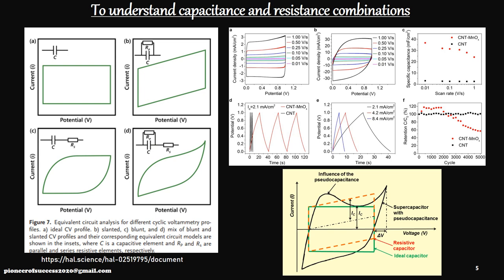An ideal supercapacitor should give a perfectly rectangular CV, but in reality different resistances in series and parallel mean we never achieve that ideal. We get shapes similar to curves C or D instead. For example, one experimental result shows a shape with edges at the corners similar to plot D — indicating capacitance with resistances in both series and parallel. Another result resembles curve C, indicating a capacitor in series with a resistance.